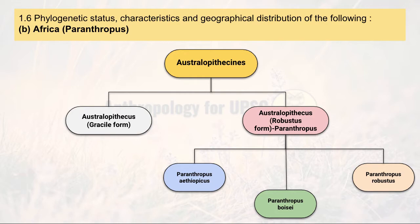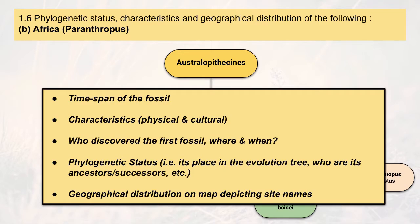We will cover all the other species mentioned in 1.6 part B in other lectures. Today we continue from the last lecture where we talked about Australopithecus divided into gracile form and robustus form. We will study the robustus form, which is also originally named Paranthropus. There are three species: Aethiopicus, Boisei, and Robustus. We will study them in terms of time scale, characteristics, fossil discoveries, who discovered them, phylogenetic status, and geographical locations. Australopithecus and Paranthropus are basically found in Africa, specifically in southern and eastern Africa.